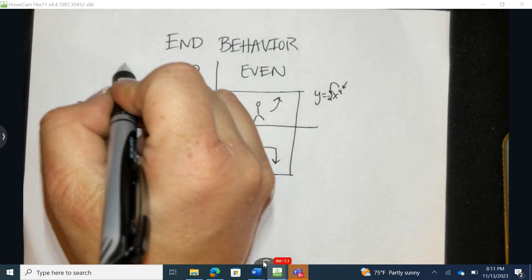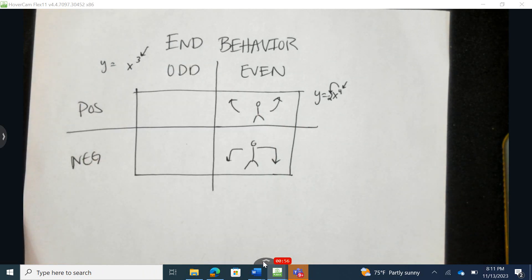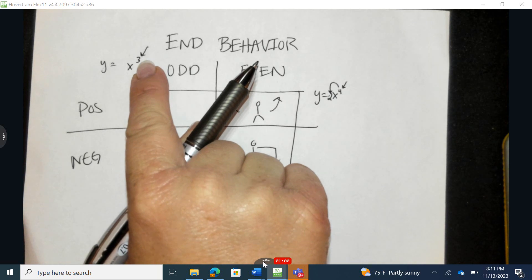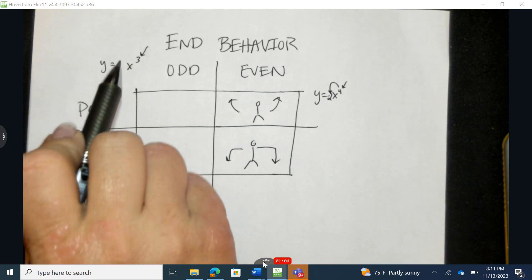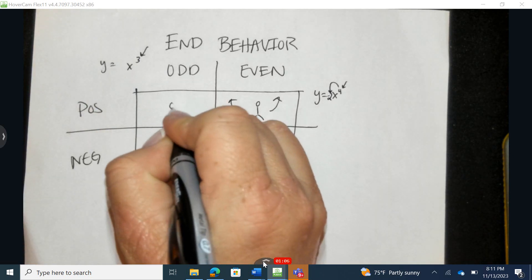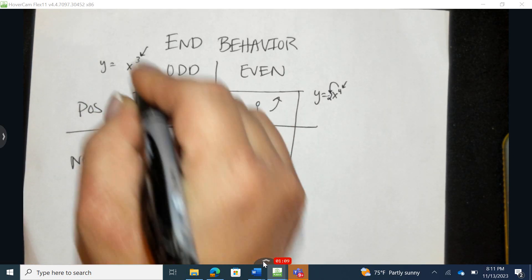If it's odd, it means the value, or also known as the degree, the highest value on a variable is an odd number, like 3, 5, 7, and so on. And when the number in front is positive, it's up on the right and down on the left.